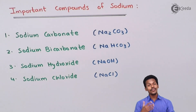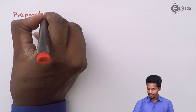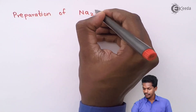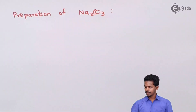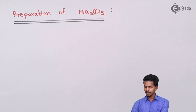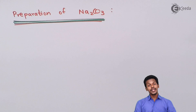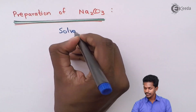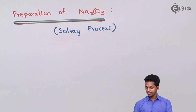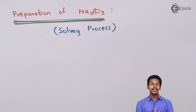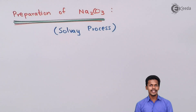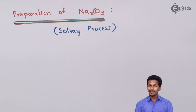Let us talk about how we can prepare sodium carbonate. The preparation of sodium carbonate can be done by the Solvay process. In the Solvay process, we take certain compounds like ammonia, water, carbon dioxide, and calcium hydroxide as raw materials, and based on these we can prepare sodium carbonate.